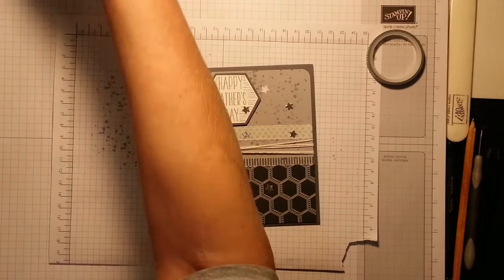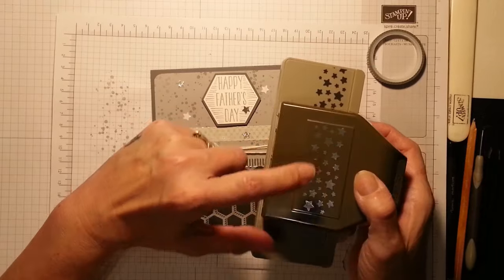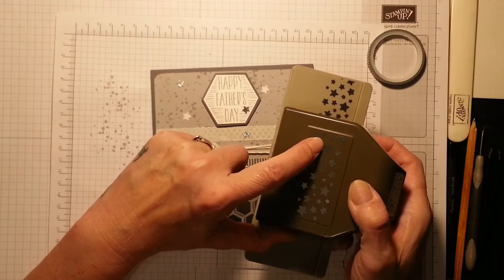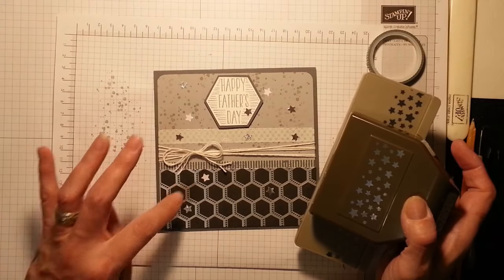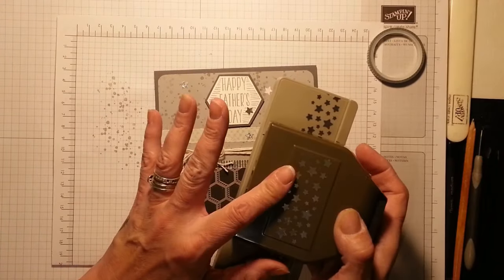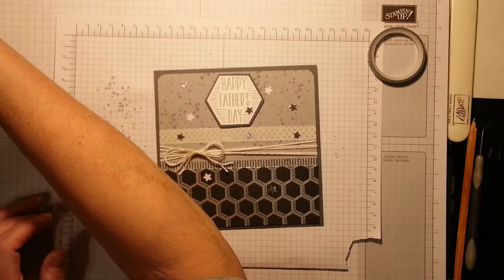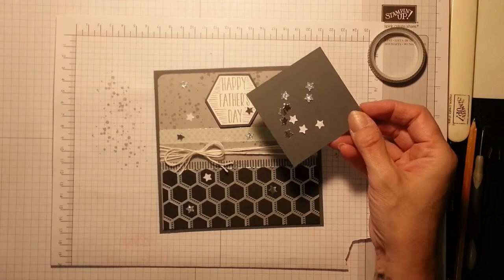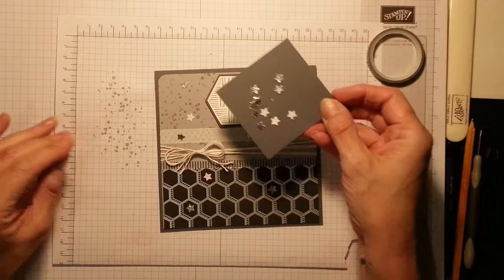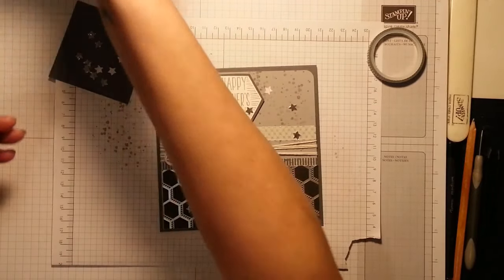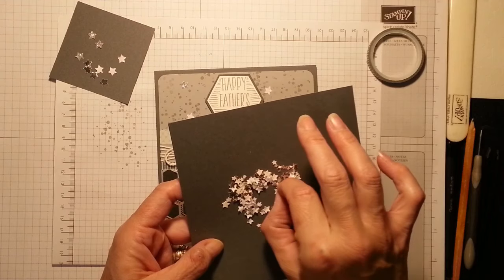So I used the little stripe one for there and this one here and obviously I've used my Nailed It stamp set. I've also gone ahead and punched stars with the Confetti Punch because you've got three large ones in each one and this is what I've used on here and down here.